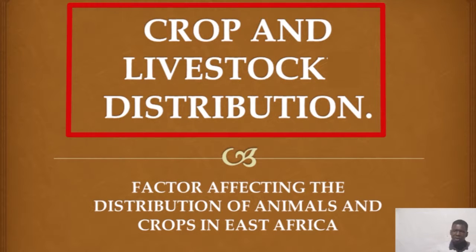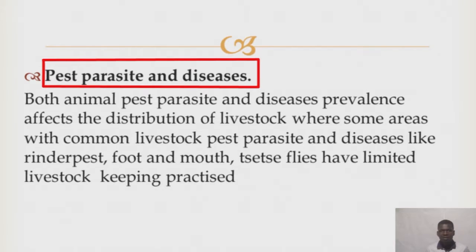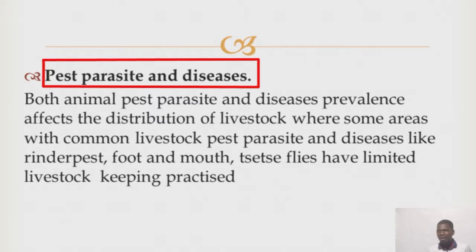What are those factors affecting their distribution? The first factor is pests, parasites and diseases. Some of the pests that attack crops include armyworm, and the cotton stainer. Those are some examples of pests.